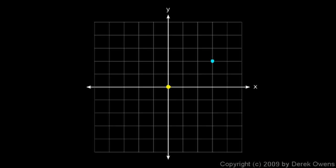Now we will see how to name coordinates for a given point, and we'll do this by looking at a series of examples. This is example one. Take a look at this point on our XY plane. You can see that if you start at the origin to get to this point, we have to move 3 to the right — that's 3 in the x direction, so x equals 3 — and then 2 up, which is 2 in the y direction, so y equals 2.